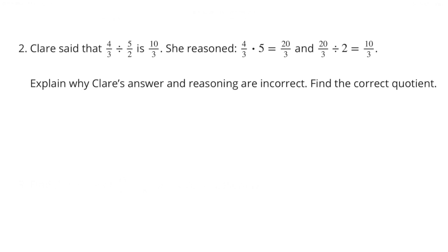Number 2. Claire said that four-thirds divided by five-halves is ten-thirds. She reasoned: four-thirds times 5 equals twenty-thirds, and twenty-thirds divided by 2 equals ten-thirds. Explain why Claire's answer and reasoning are incorrect.